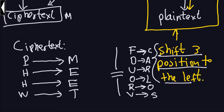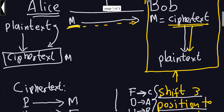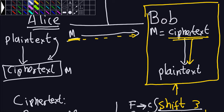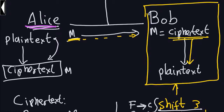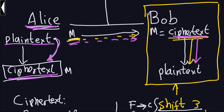Let's review what we just did. Alice wanted to send a message — the plain text — and she transformed it into cipher text. That cipher text is the actual message sent through the insecure channel. Bob receives the cipher text, and all he has to do is reverse what Alice did: shift three positions to the left. He takes the cipher text and gets back the plain text, and the communication is complete.